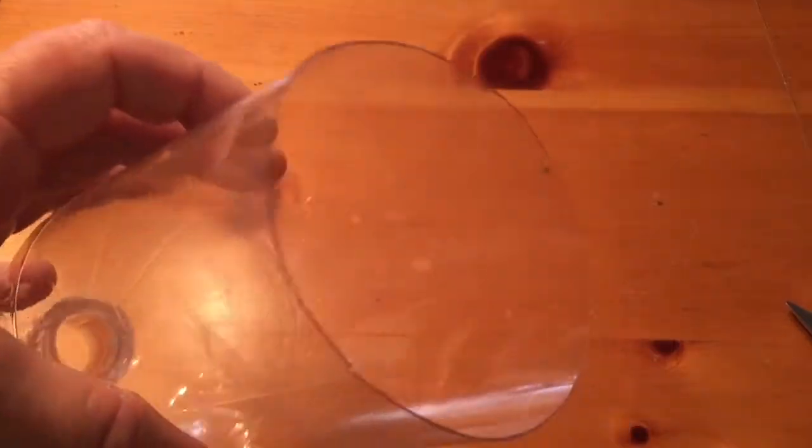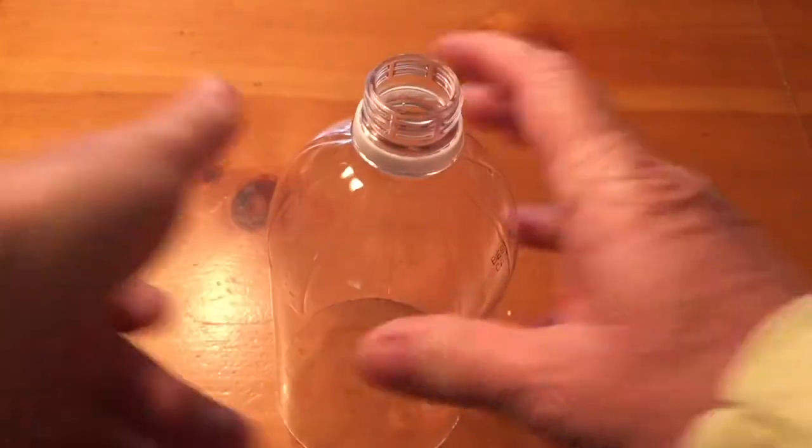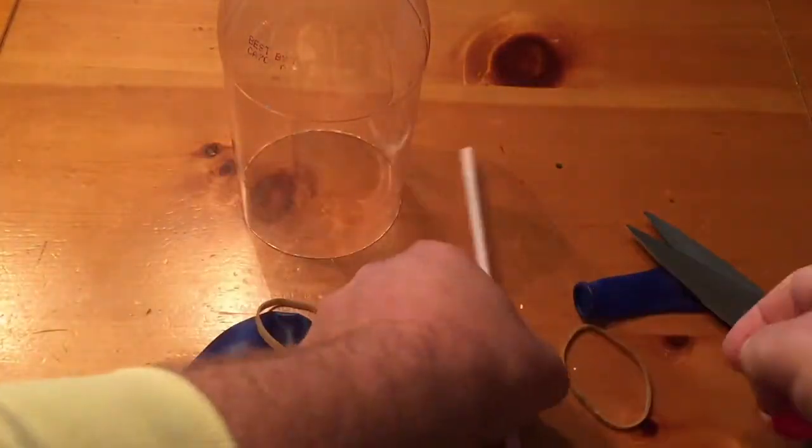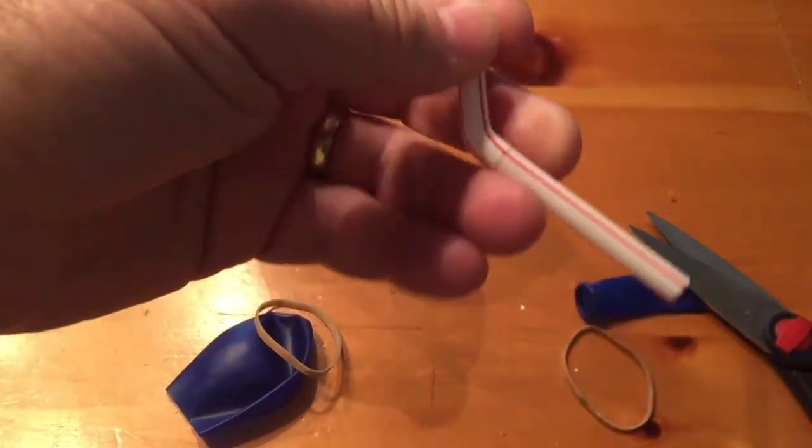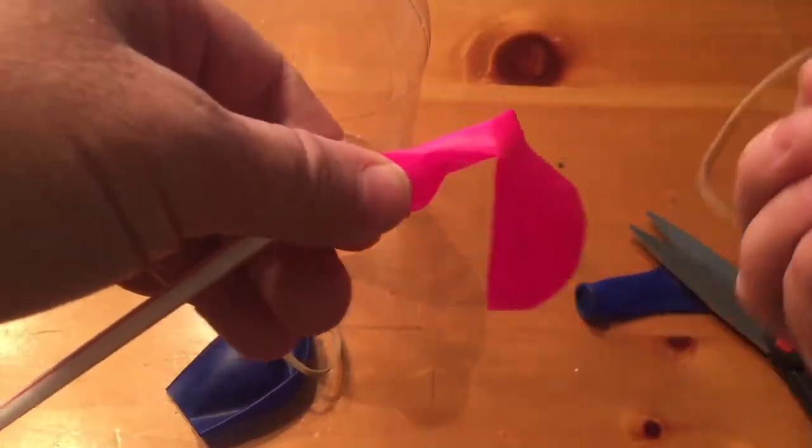When you're finished cutting the bottom off, it should look like this. Next step, take your straws and your rubber bands and your balloons. I have bendy straws that seem to keep the balloons away from each other. Put your balloon on and then take your rubber band and wrap it around so it's securely tight so no air can escape the balloon.